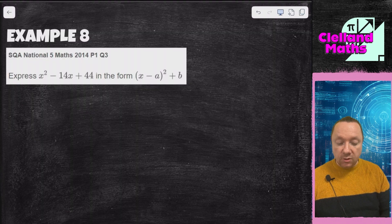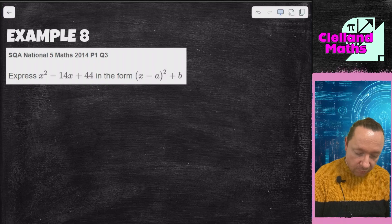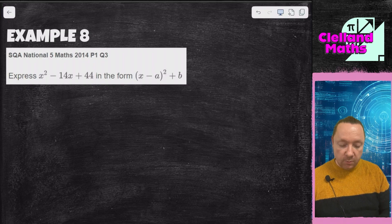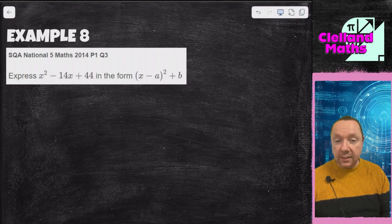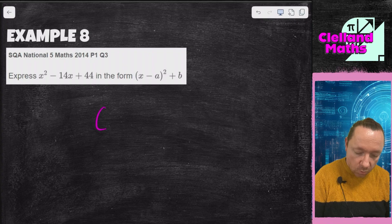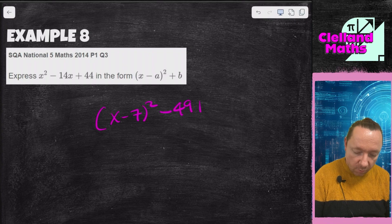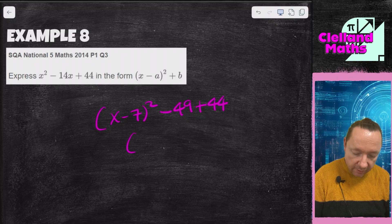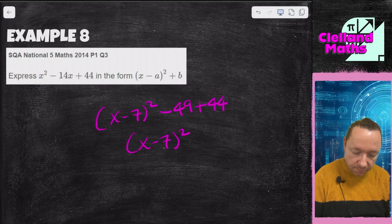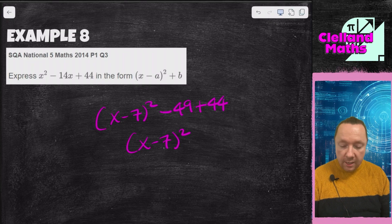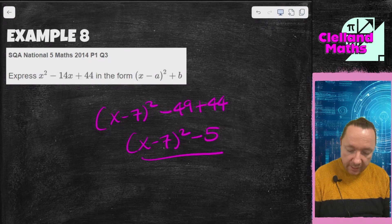Example 8, National Five Maths 2014 paper 1 question 3. I've got x squared minus 14x plus 44 in the form x minus a squared plus b. So x minus 7 all squared, take away 49, but I've got plus 44. So that's x minus 7 squared, minus 49 plus 44 is minus 5. And we're done there.